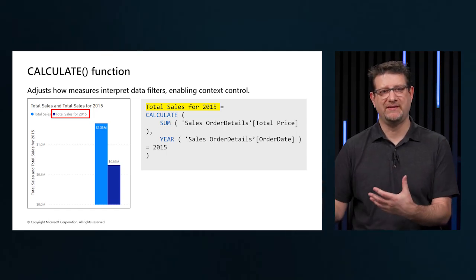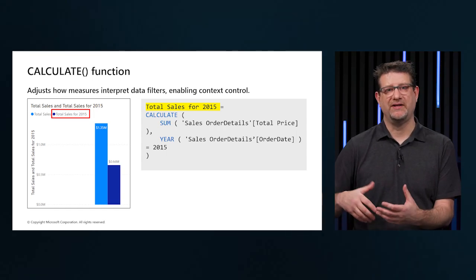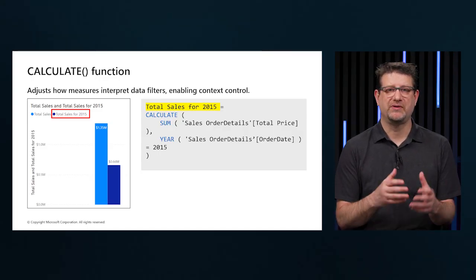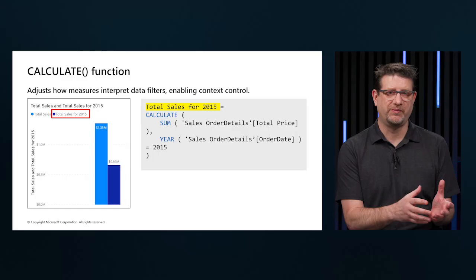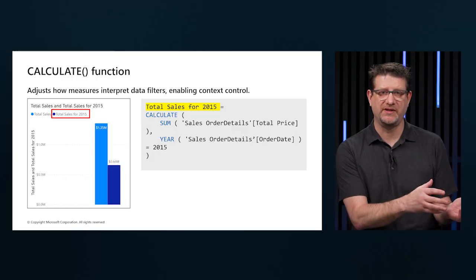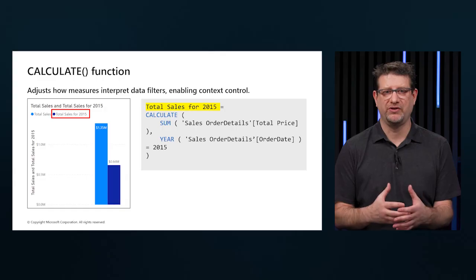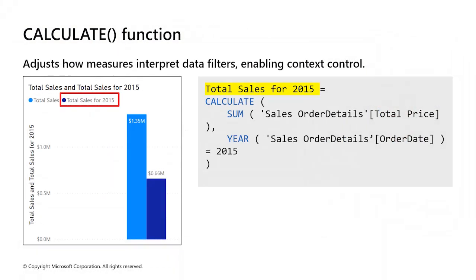When we pass in that date for 2015, that is replacing the filter context as a constant. CALCULATE is aggregating the total price column just as in previous measures. However, instead of operating over the entire semantic model using whatever the filter context tells it to do, we are overriding that for the filter context of the year 2015. So no matter what year is selected, we will always get the total for 2015. All the other filters still apply.